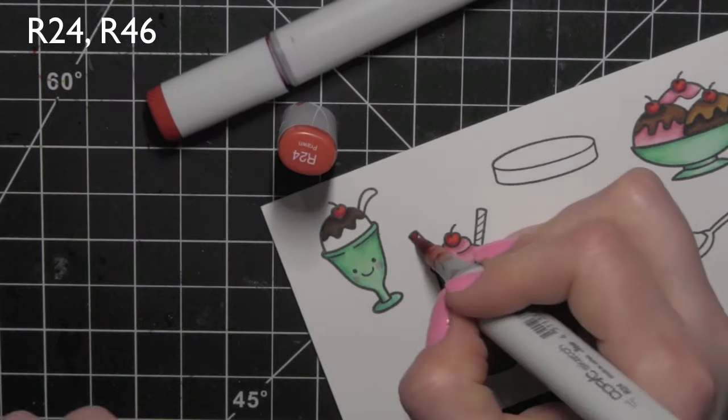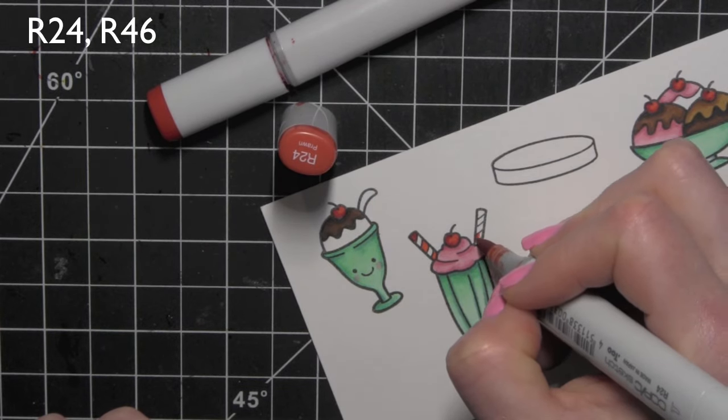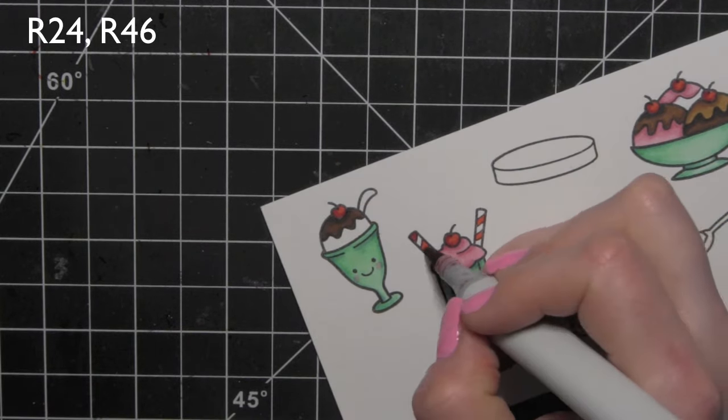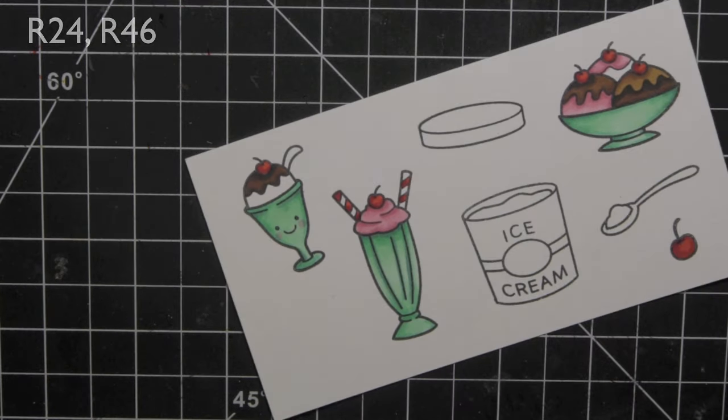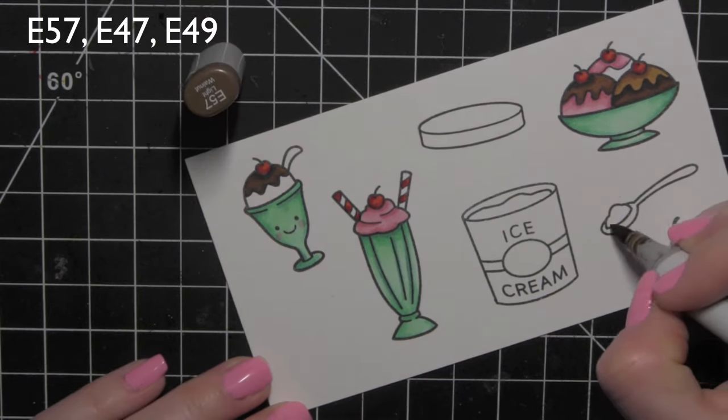For the straw I am going to use R24 and R46 to create a little white and red striped straw or straws coming out of the one dish or ice cream dish.